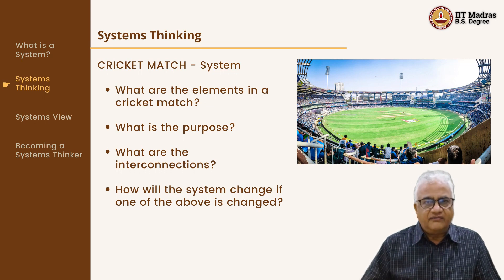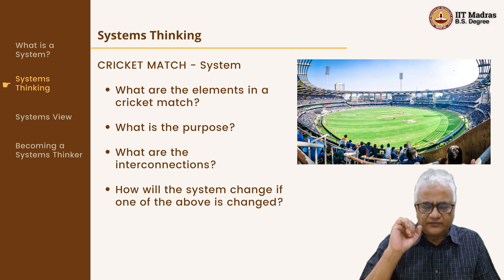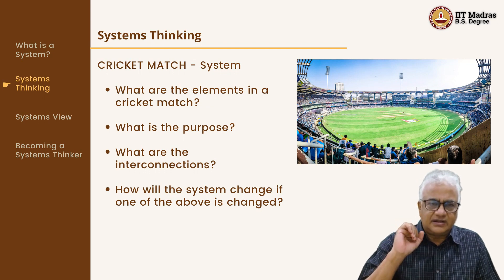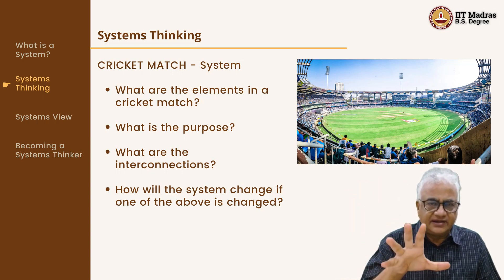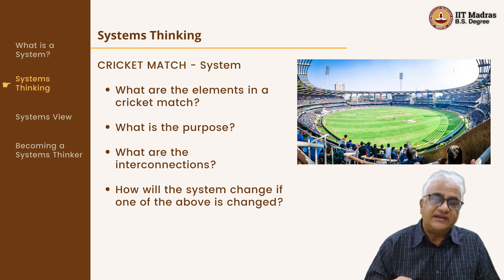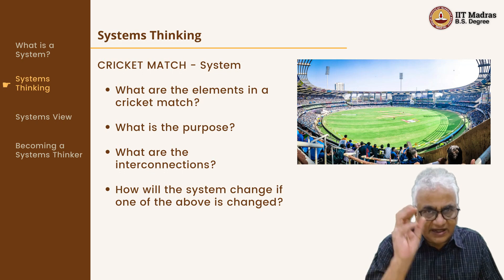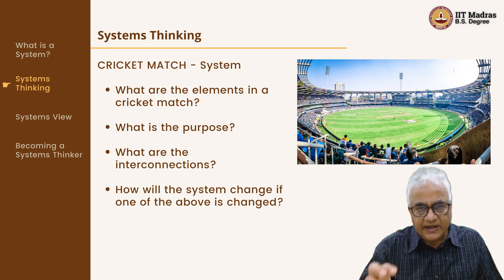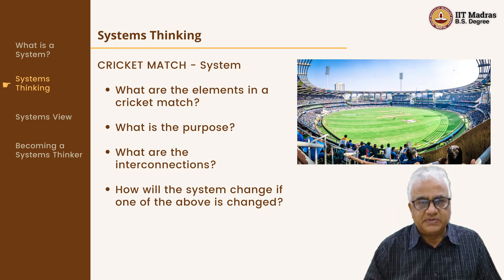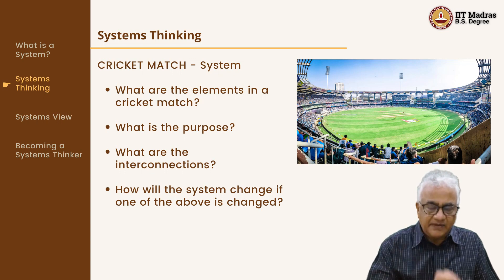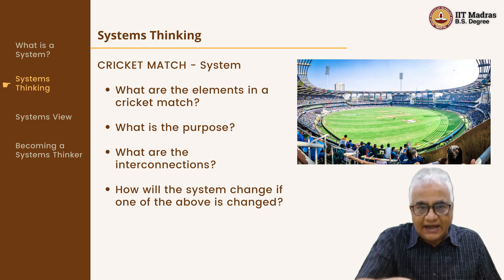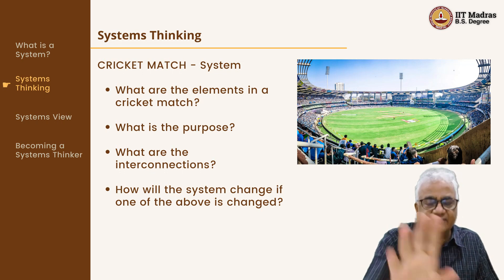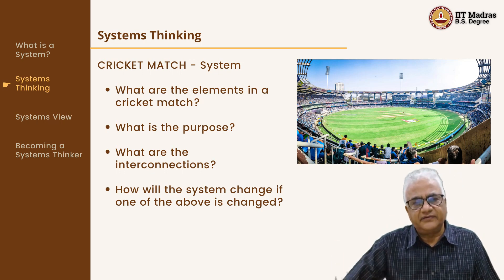So what have we learned? We have learned the example of IIT Madras and the example of a cricket match, and we have started to understand systems. But the basic simple rules remain: a system is elements, interdependencies and connections, and purpose. Elements, interconnections, purpose — nothing changes there, and all three things are right in front of you.